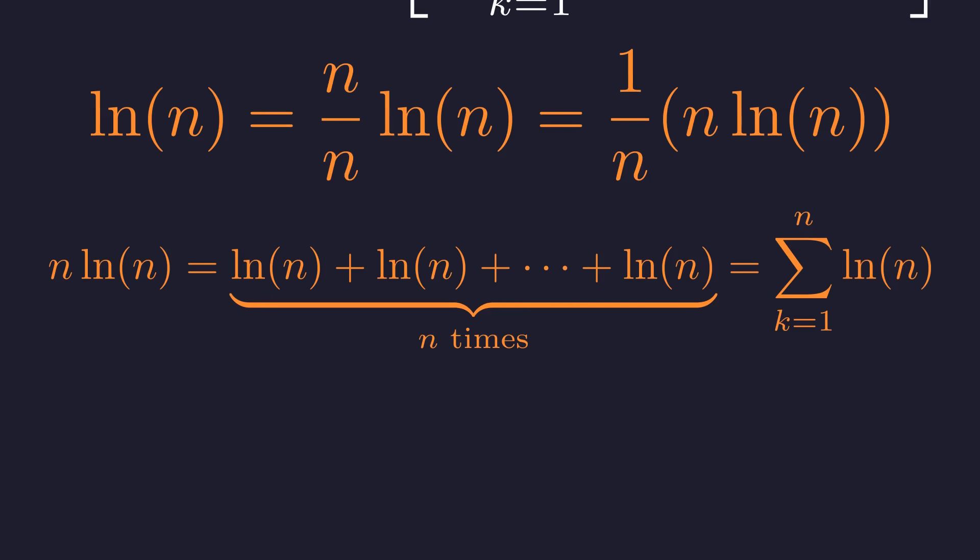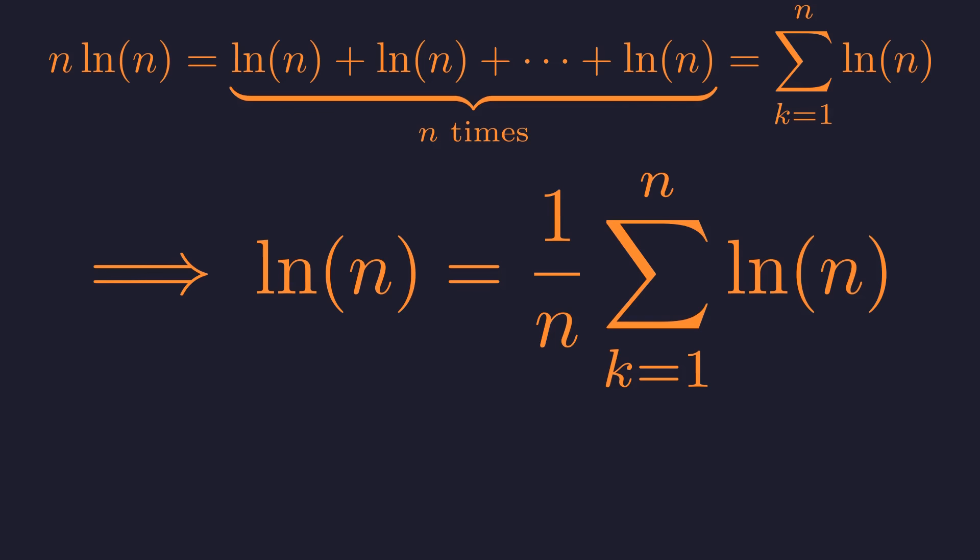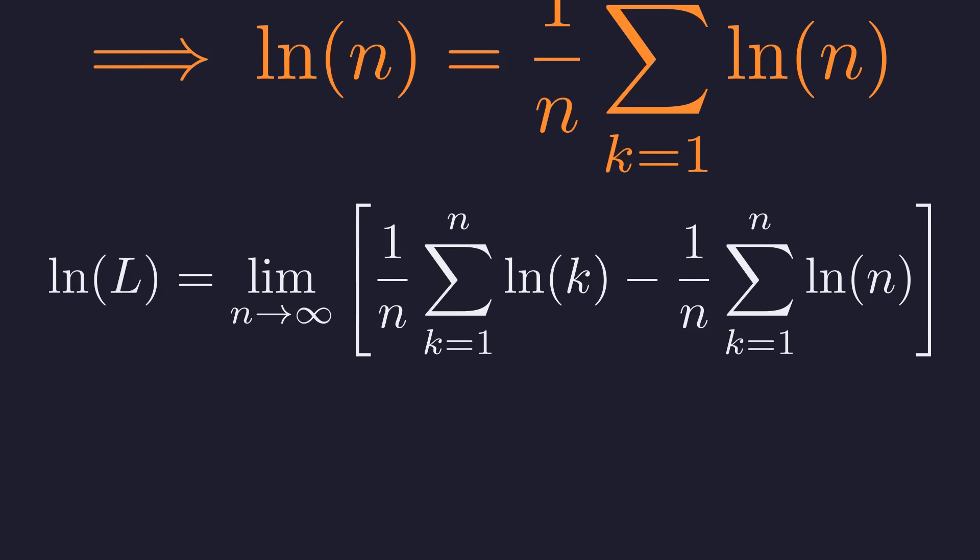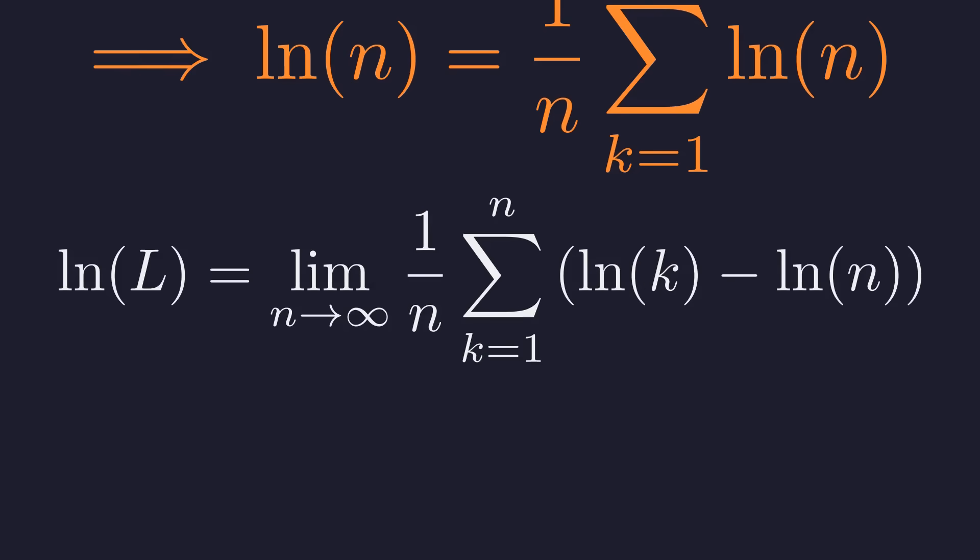Now, n times the natural log of n is just the sum of the natural log of n with itself, n times. This can be written as a summation from k equals 1 to n. Therefore, we can replace the natural log of n with this equivalent summation form. This is the key manipulation. Substituting this back gives us the difference of two summations. Now that both terms have a common factor of 1 over n and are summations over the same index, we can combine them. Factoring out 1 over n gives us the sum of the difference of the logs. Using our log property for quotients again, the difference of logs is the log of the quotient. And there it is.